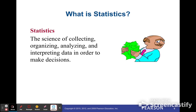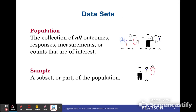We already know statistics is the science of collecting, organizing, analyzing, and interpreting data in order to make decisions. Now we'll proceed with data sets. When we get our data, we usually get it from the population — the collection of all outcomes, responses, measurements, or counts that are of interest. However, in some cases it's really hard to use the entire population.